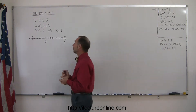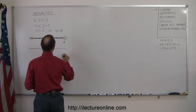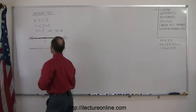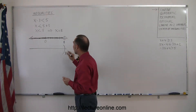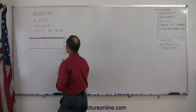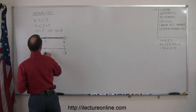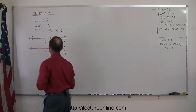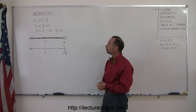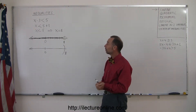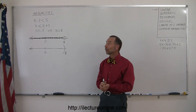Another way to write that solution is by using parentheses and brackets. Parentheses mean the number is not included; a bracket means it is included. So with an arrow to the left — here's 0, there's 8 — these are different ways of writing the exact same solution: all values for x less than 8 will satisfy that inequality.